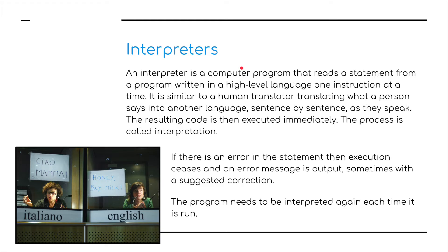An interpreter is a computer program that reads a statement from a program written in a high-level language, but does it one instruction — basically one line — at a time. It is similar to a human translator translating sentence-by-sentence as a person speaks. The resulting code is then executed immediately; this process is called interpretation. If there is an error in the statement, execution ceases and an error message is output, sometimes with a suggested correction. The program needs to be interpreted again each time it is run, doing it line-by-line rather than all in one go.